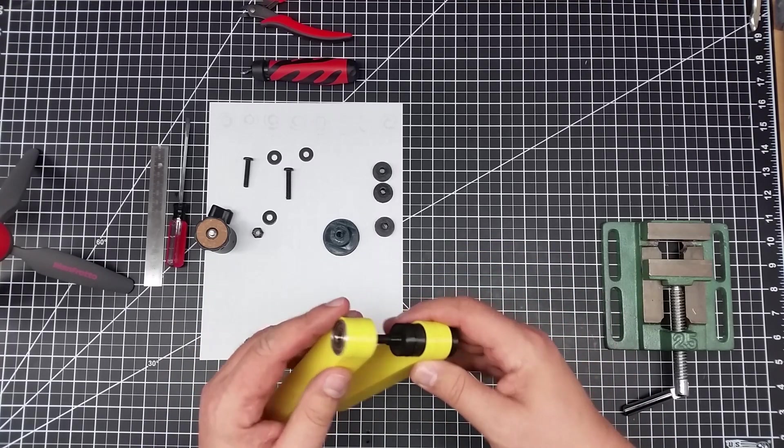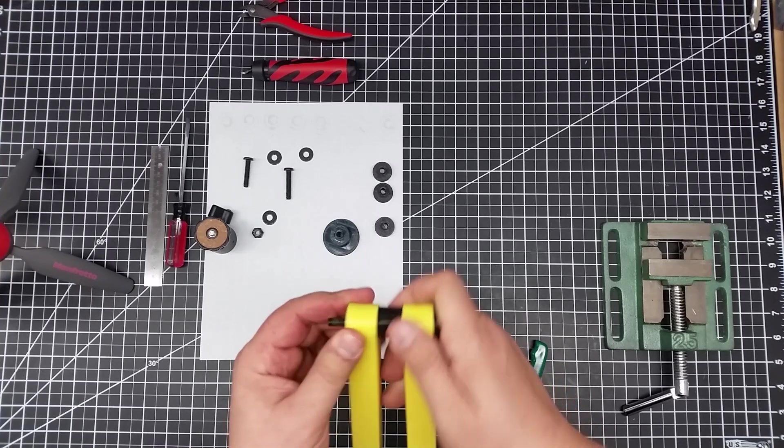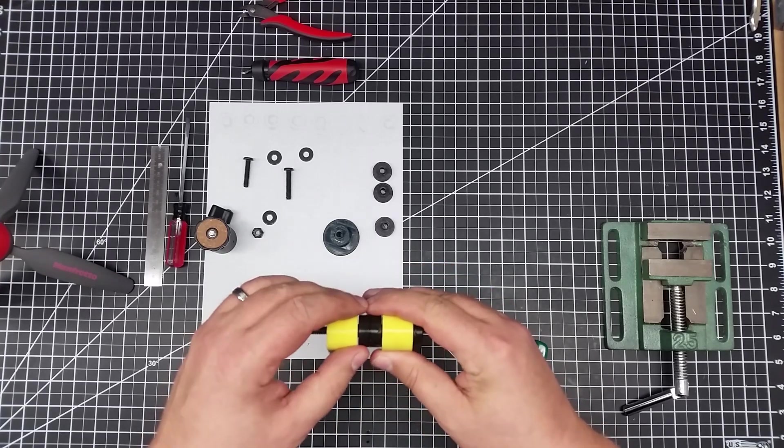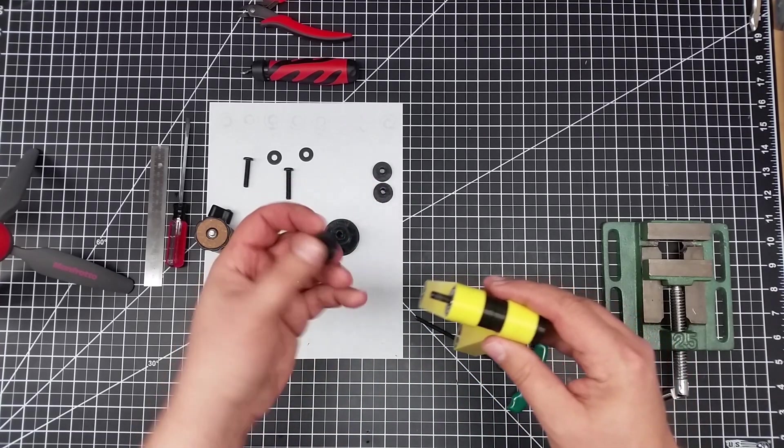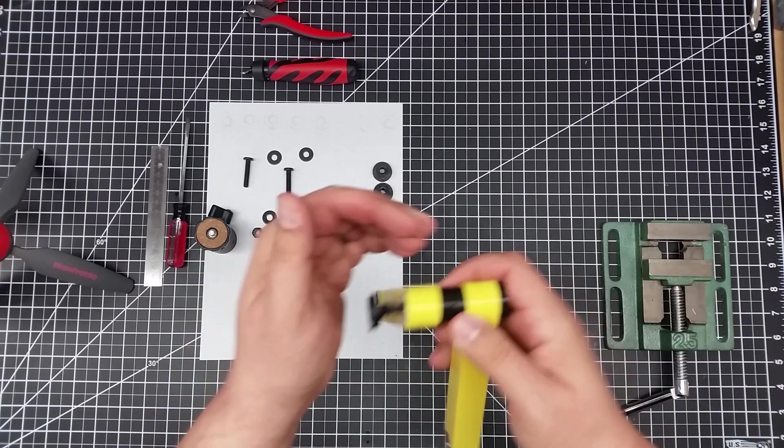And this, again, will pop through. And this piece will insert. So now you begin seeing. And again, the race on this plastic piece will press against the race on the bearing. And then what we'll do is we'll simply take another one of these end caps.